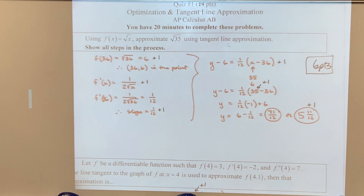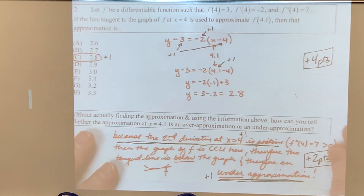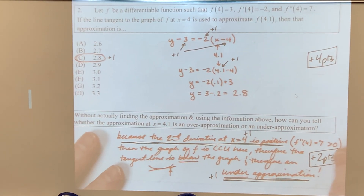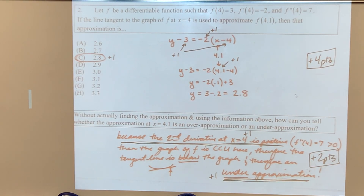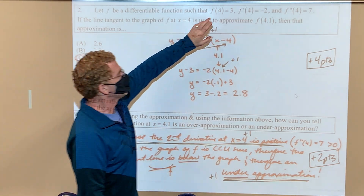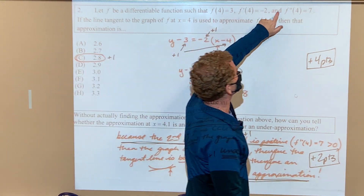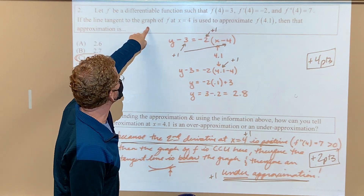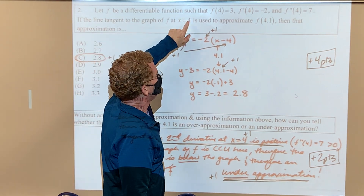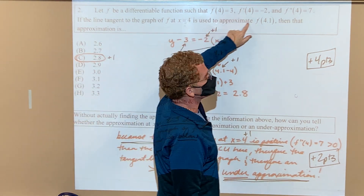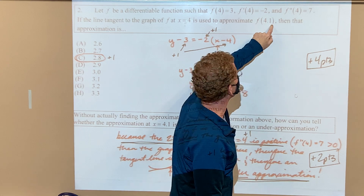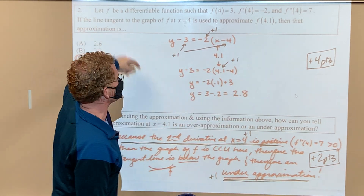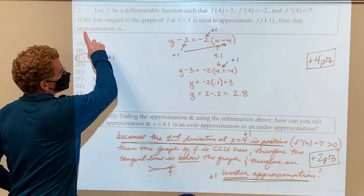Tangent line approximation. Here's another one where they gave you the function's value at 4, the derivative function's value at 4, the second derivative function's value at 4, and they said if the line tangent to the graph of f at x=4 is used to approximate the function at 4.1, then what would that approximation be?